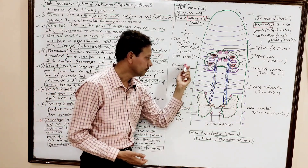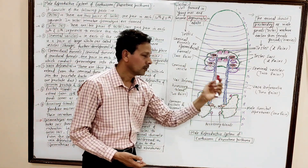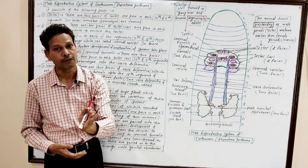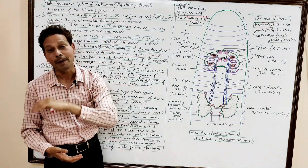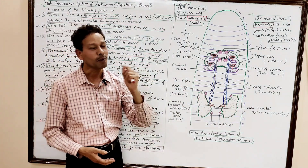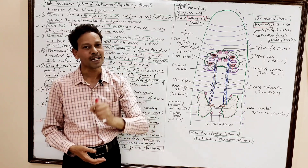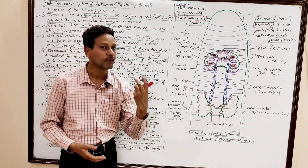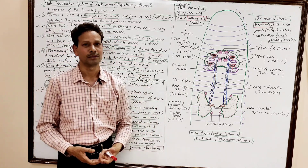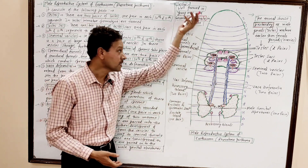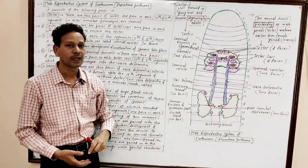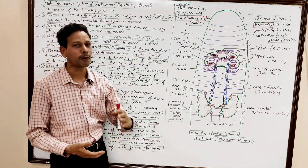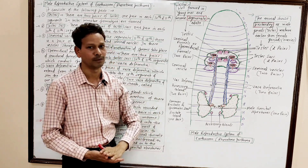The spermatheca are parts of the female reproductive system. In tomorrow's lecture we will discuss the female reproductive system of the earthworm. This is all about the male reproductive system of earthworm.